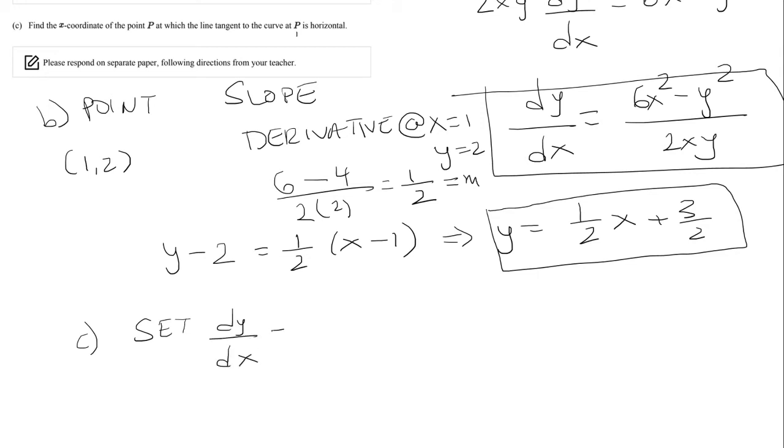Whenever you get a horizontal line, that means the derivative is 0. So set derivative equal to 0. The derivative we set is (6x² - y²)/(2xy). Multiply both sides by 2xy, I get 6x² - y² = 0.